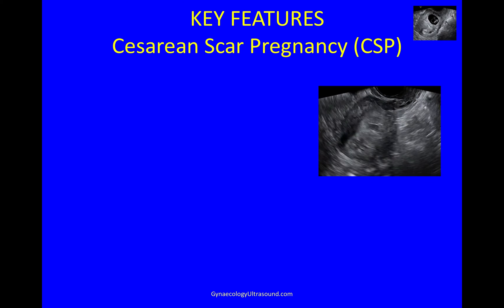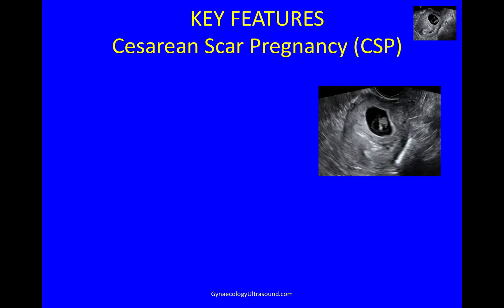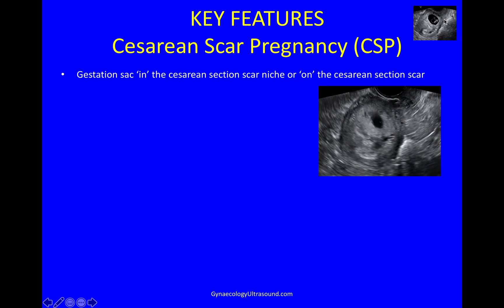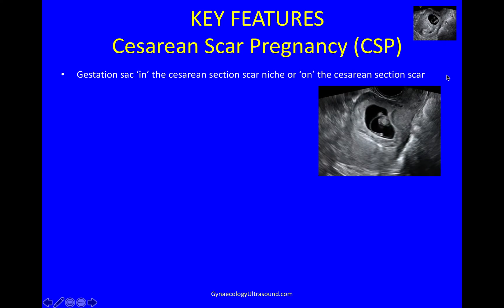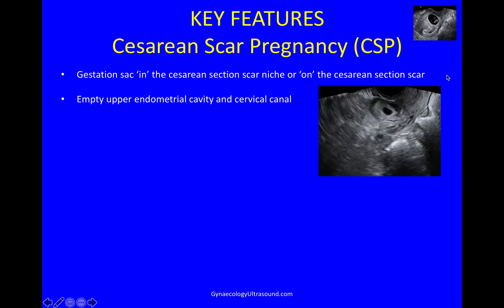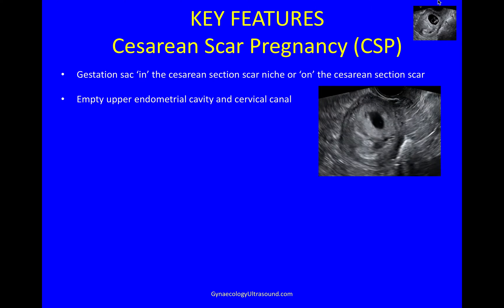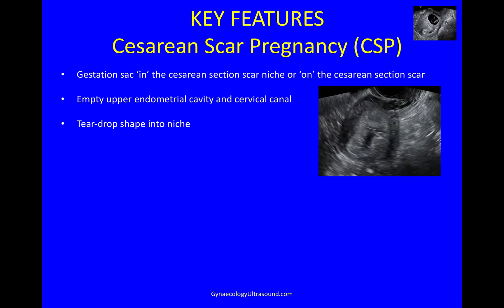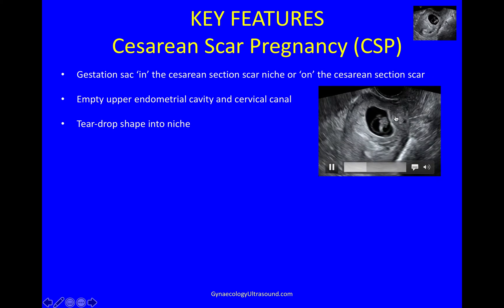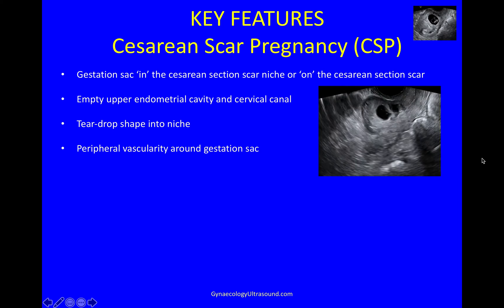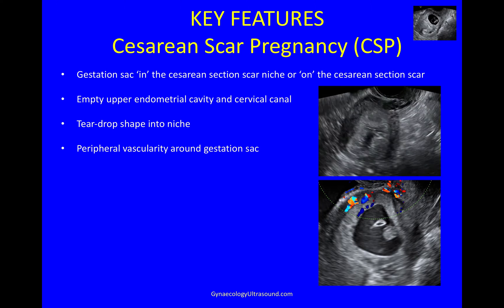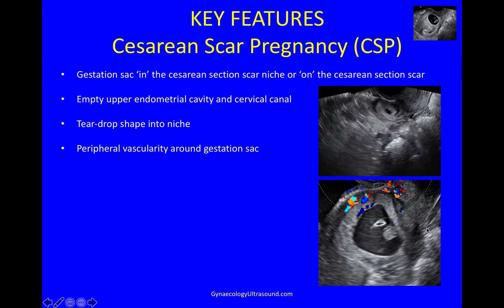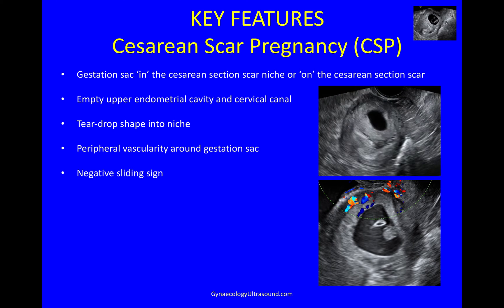In cesarean scar pregnancies the diagnosis is made on 2D: the gestation sac is deeply embedded within the cesarean niche, or implanted on top of the cesarean section scar. It is diagnosed by seeing an upper empty endometrial cavity, an empty cervical canal, and sometimes at an earlier gestation the gestation sac looks teardrop-shaped into the niche. Importantly, you see peripheral vascularity around the gestation sac, confirming it is embedded in this abnormal location, with a negative sliding sign.